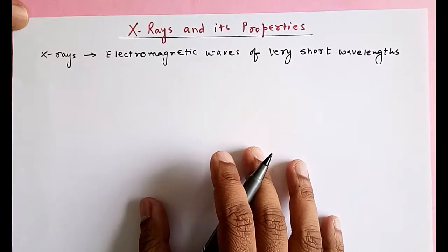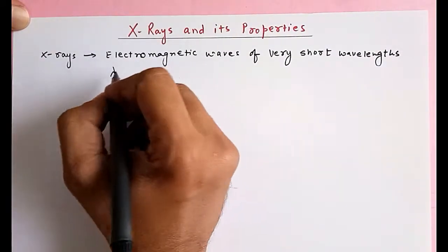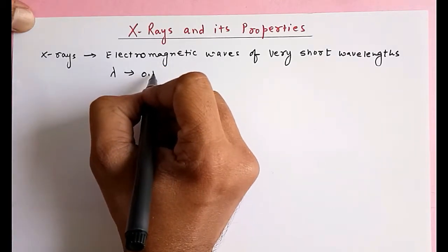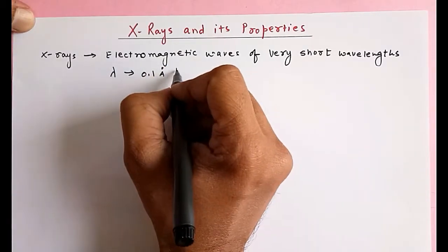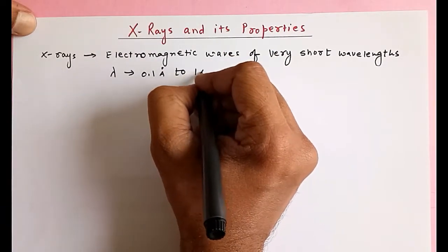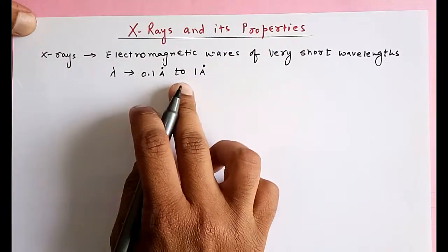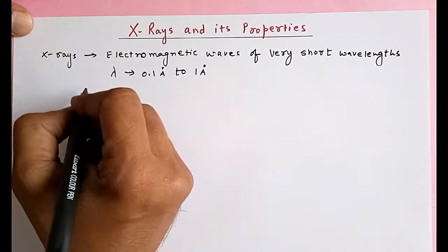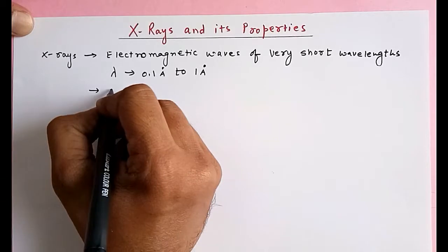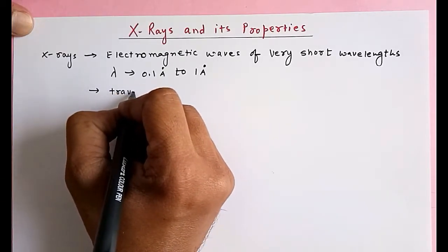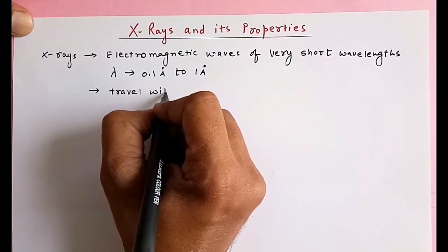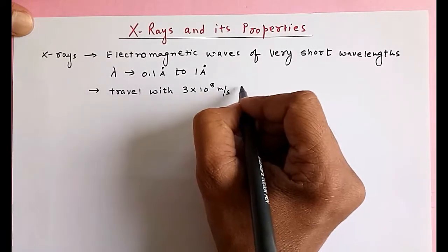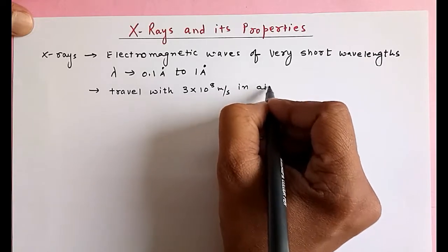Its wavelength range, lambda, is from 0.1 angstrom to 1 angstrom. This is the wavelength range of X-rays, and they travel with the speed of light in air.